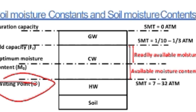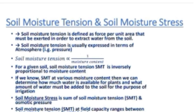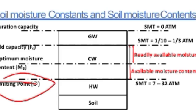Field capacity corresponds to ground water. This is the field capacity, and at saturation it is the saturated capacity. The soil moisture tension in this zone is 7 to 32 atmospheres.